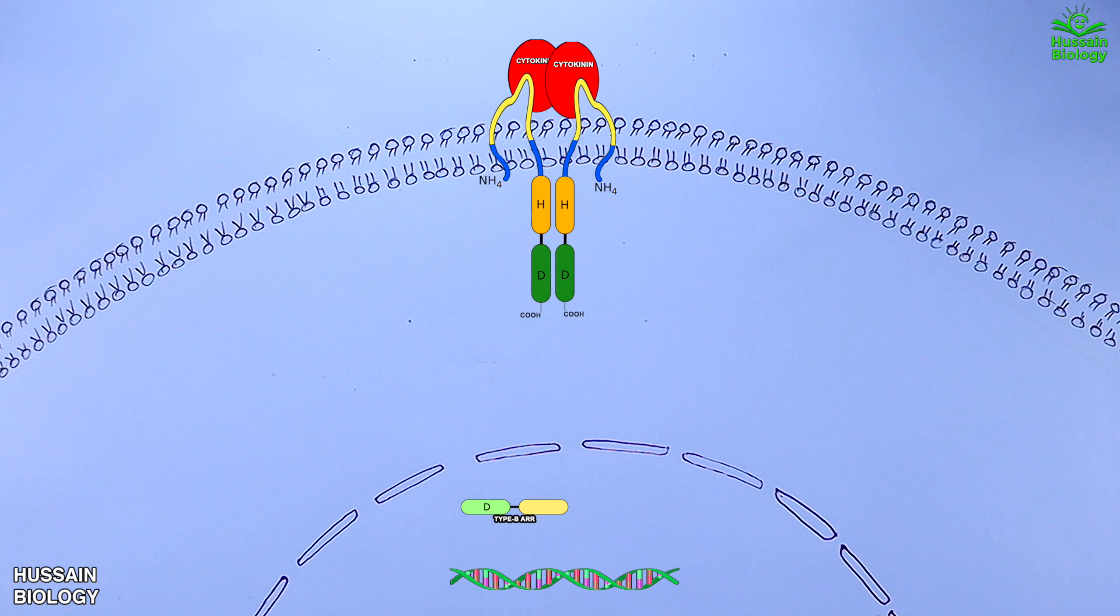The activated his kinase acts on ATP and gets the phosphate from it, and then this phosphate on his kinase is transferred to the aspartate residue on the receiver domain, as shown in the diagram.